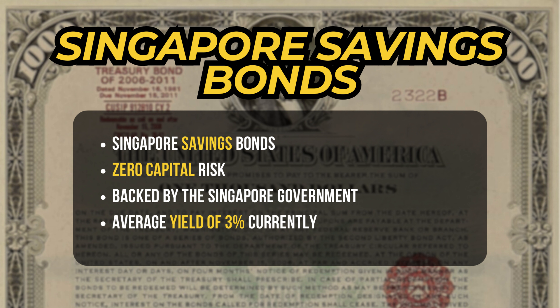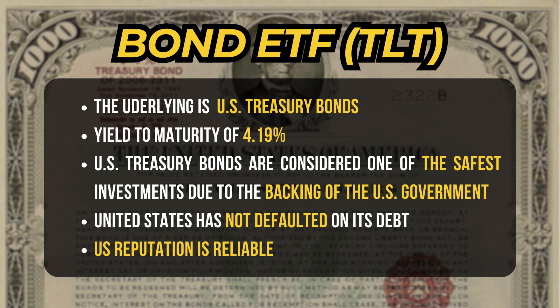For bonds, we like the SSB — the Singapore Savings Bond — which pays an average of 3% coupons and carries zero capital risk. These are 10-year bonds fully backed by the Singapore government. You can also invest in bond ETFs with exposure to US government bonds, such as the iShares 20-plus-year US Treasury Bond ETF, also called TLT, which has a current yield to maturity of 4.19%. TLT tracks the underlying 20-plus-year US Treasury Bonds. US Treasury Bonds are one of the safest investments due to the US government's reputation as leader of the global economy, and the US has so far not defaulted on its debt. The US dollar also remains the most influential globally traded currency to date.